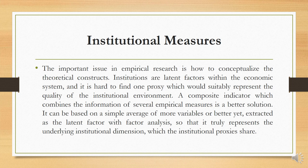Regarding institutional measures, an important issue in empirical research is how to conceptualize these theoretical constructs. Institutions are latent factors within the economic system and it is hard to define one proxy which would stably represent the quality of the institutional environment. A composite indicator combining the information of several empirical measures is a better solution. It can be based on a simple average of multiple variables, or better yet, one proxy is expected as the latent factor with factor analysis so that it truly represents the underlying institutional dimension.